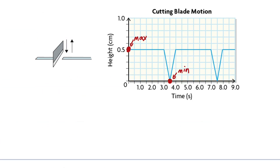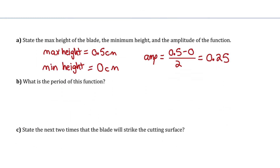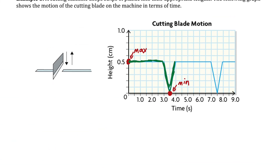Part B asks for the period. Mapping off one cycle: the blade stays stationary at a height of 0.5 cm for a few seconds, then drops down, cuts whatever is on the cutting board, and goes back up — that's one cycle. The cycle starts at 0 seconds and finishes at 4 seconds, so the period is 4 seconds.